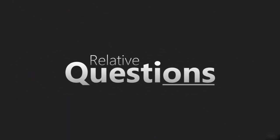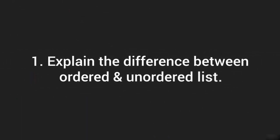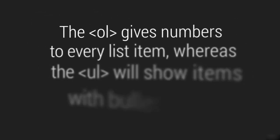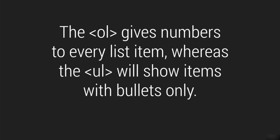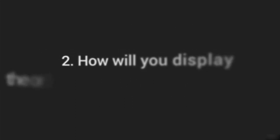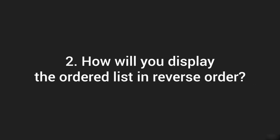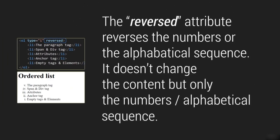Let's talk about relative questions. The first question is: explain the difference between ordered and unordered list. The ol gives numbers to every list item, whereas the unordered list will show items with bullets only. The second question is: how will you display the ordered list in reverse order? It is the reversed attribute, which reverses the number or alphabetical sequence. It doesn't change the content — just the numeric or alphabetical arrangement.